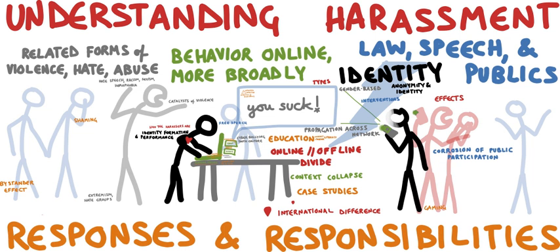Crimes that use computer networks or devices to advance other ends include fraud and identity theft, although this increasingly uses malware, hacking or phishing, making it an example of both computer-as-target and computer-as-tool crime. The unsolicited sending of bulk email for commercial purposes (spam) is unlawful in some jurisdictions. Phishing is mostly propagated via email. Phishing emails may contain links to other websites that are affected by malware, or they may contain links to fake online banking or other websites used to steal private account information.